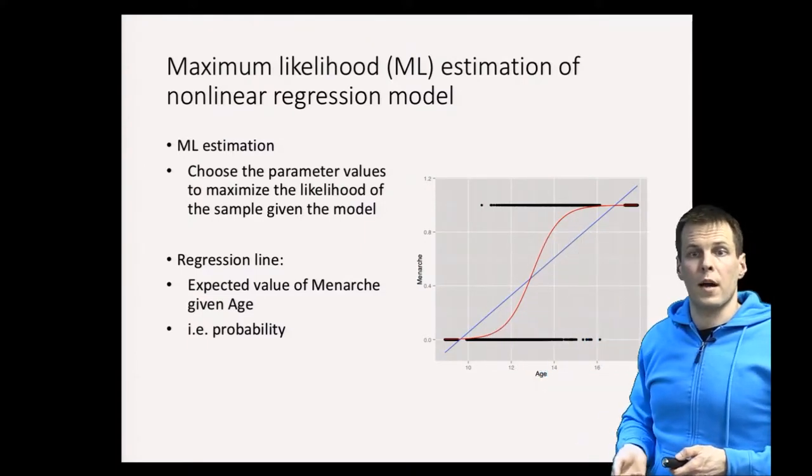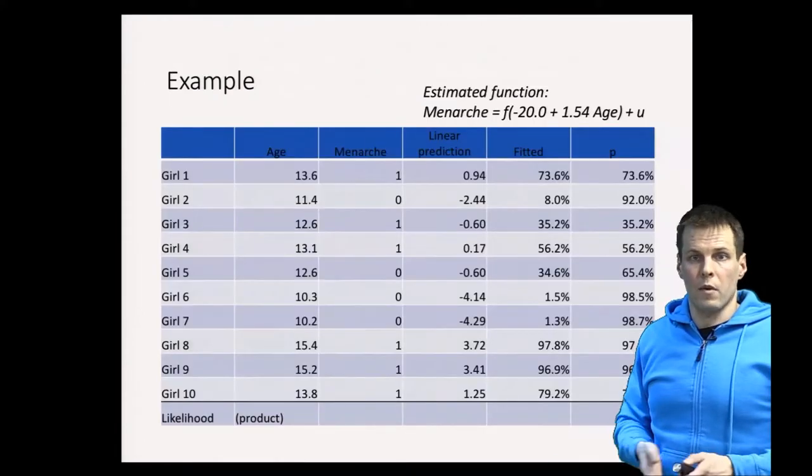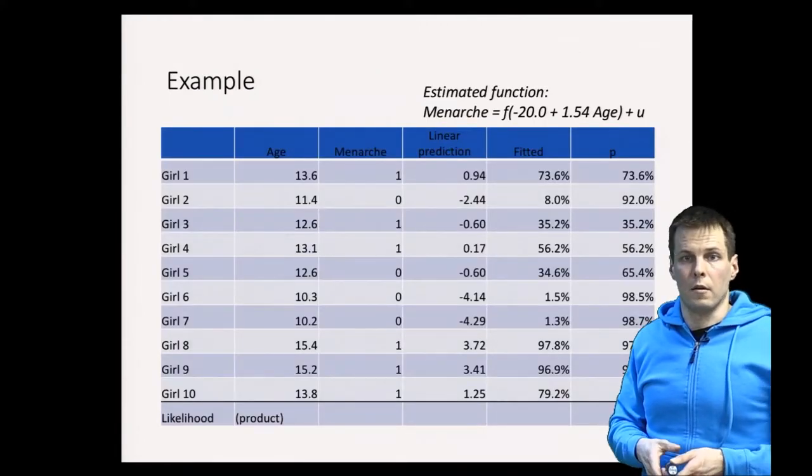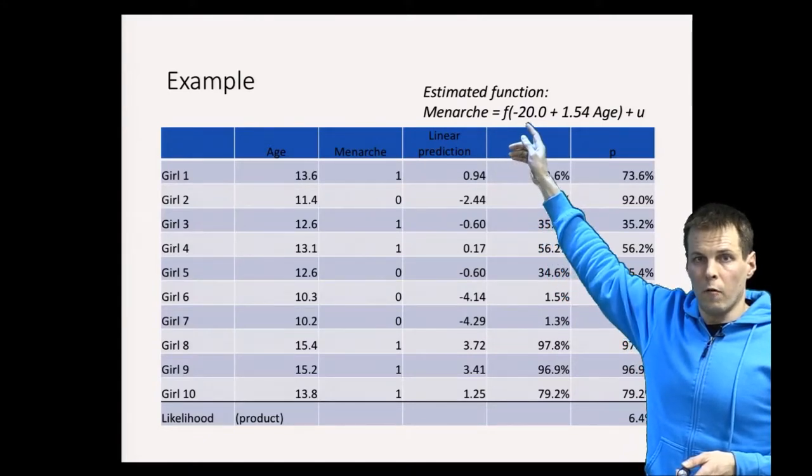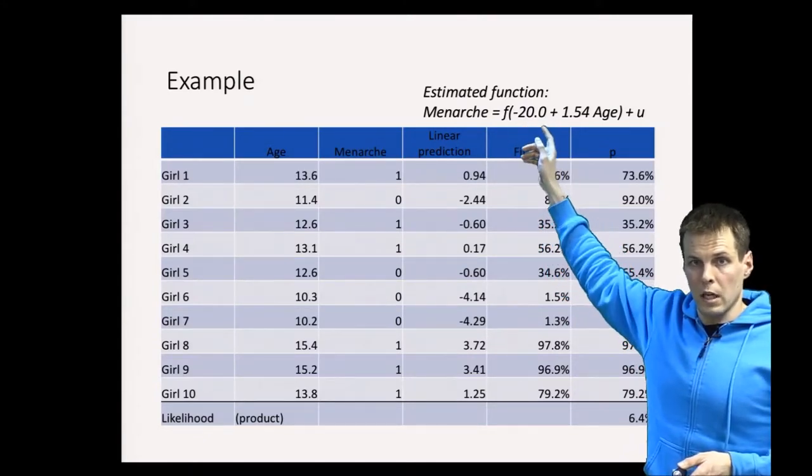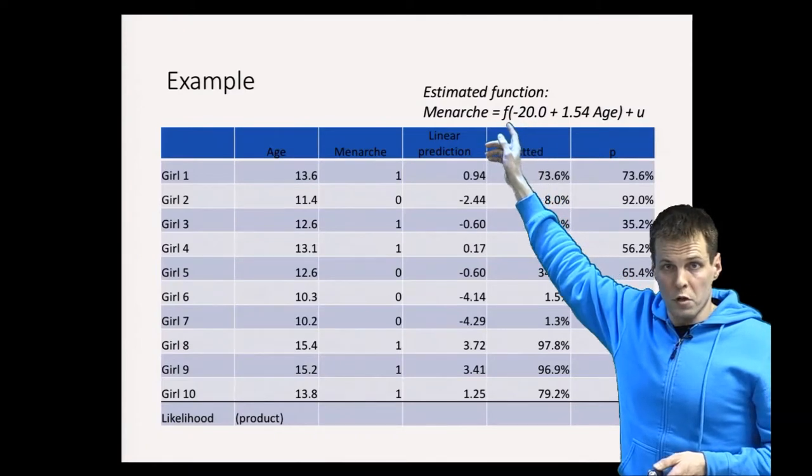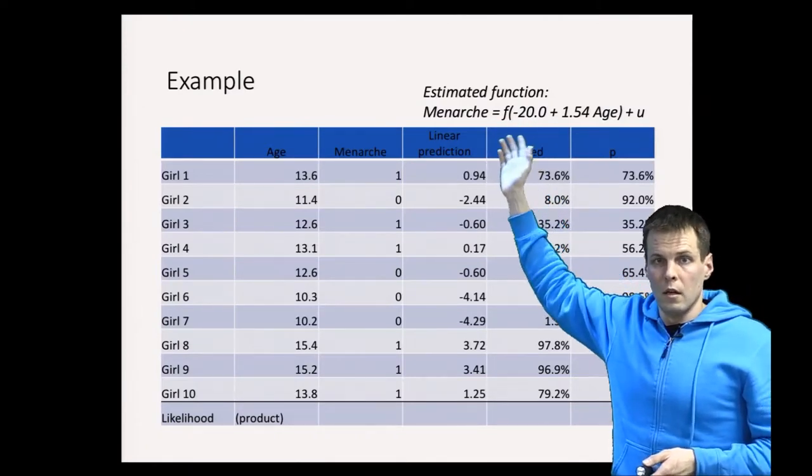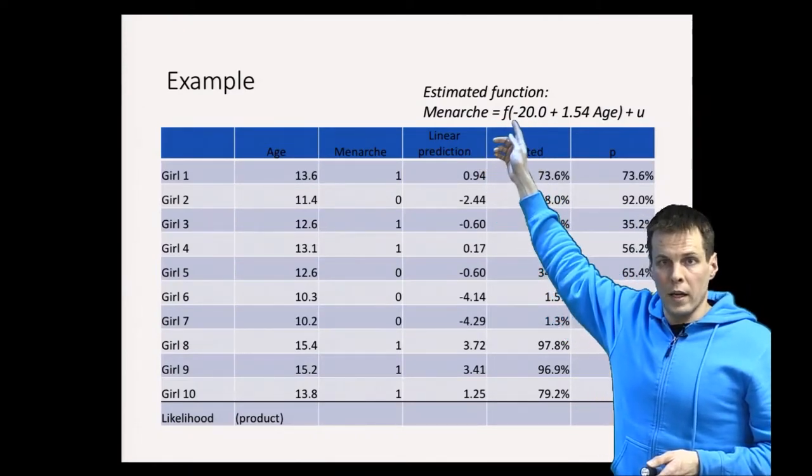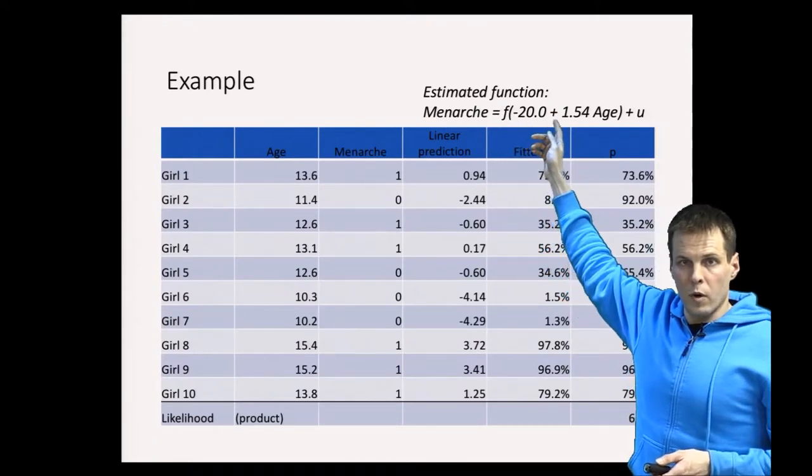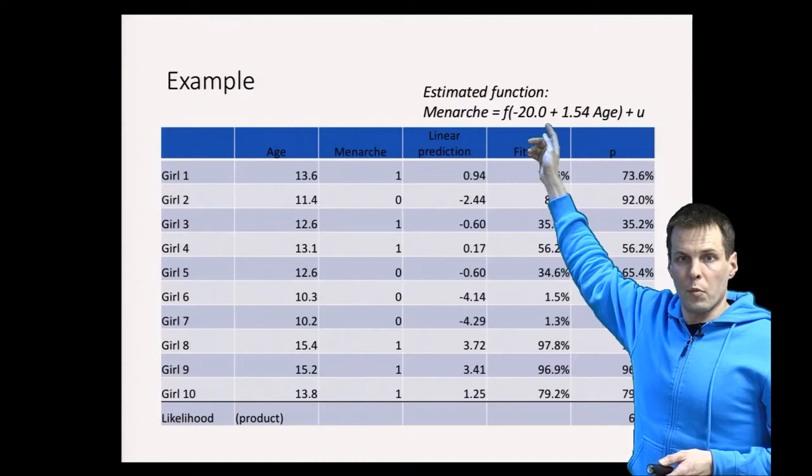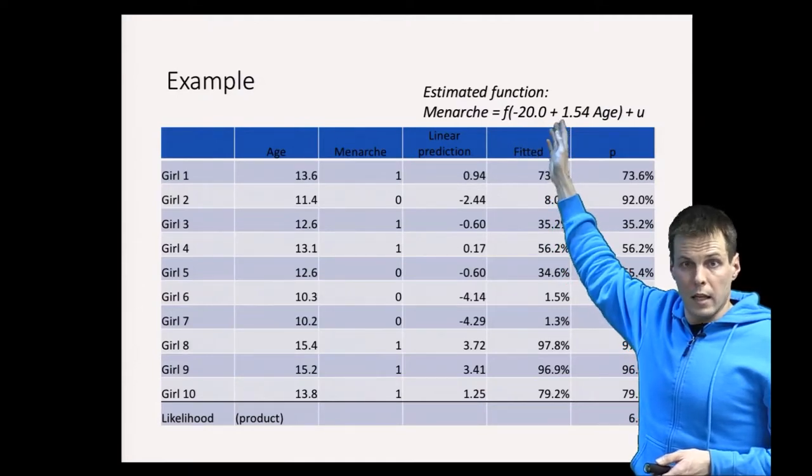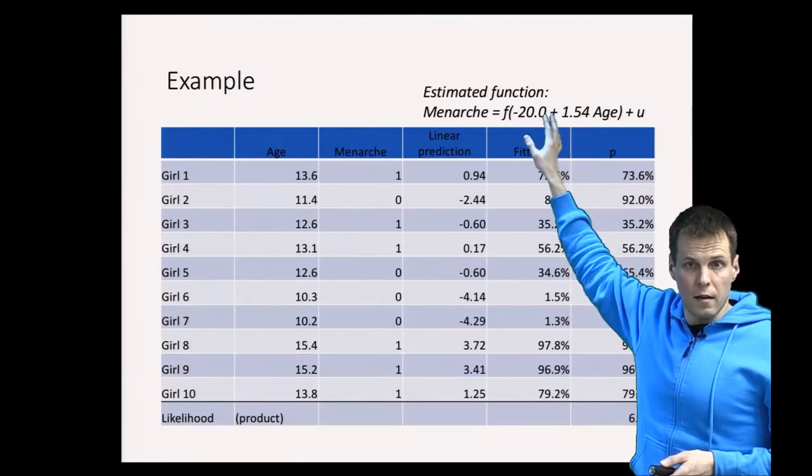How it works in practice is that we have some kind of guess. We guess that menarche is a linear function of age and an intercept, transformed using the logistic function. Let's say the intercept is minus 20 and the effect of age is 1.54. We apply the logistic function to the linear prediction, and that gives us the expected probabilities.